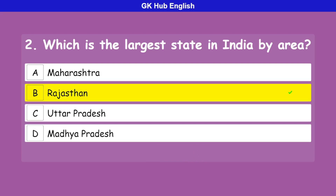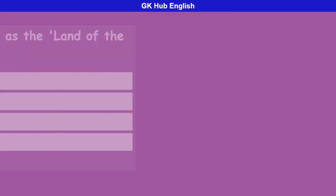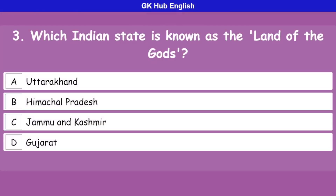Question 3: Which Indian state is known as the land of the gods? Option A is Uttarakhand, option B is Himachal Pradesh, option C is Jammu and Kashmir, option D is Gujarat. Correct answer is Uttarakhand.